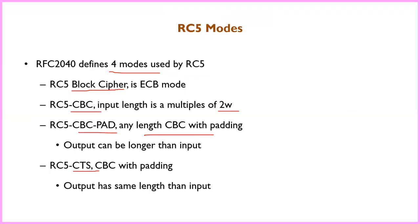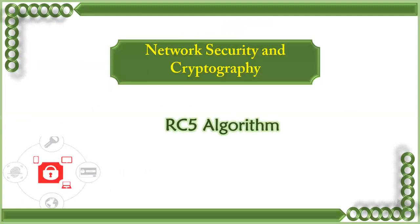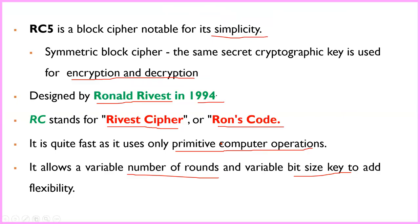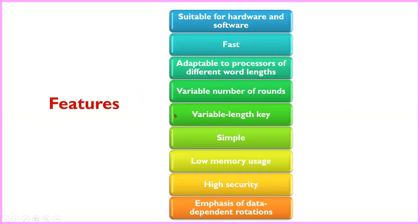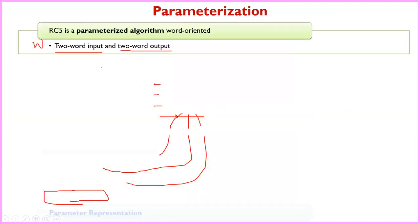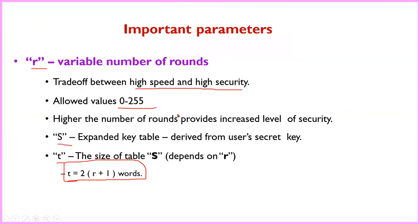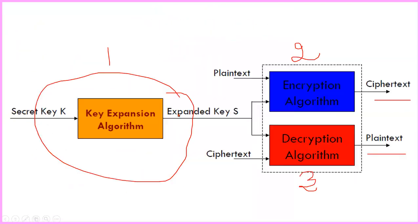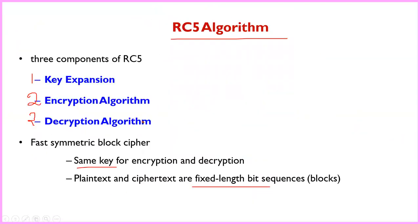To summarize the working nature of RC5: the algorithm has three main processes — key expansion, encryption, and decryption. These form the core components of the RC5 algorithm.